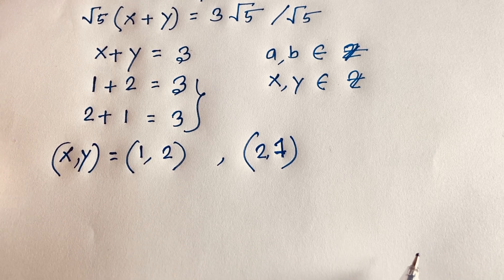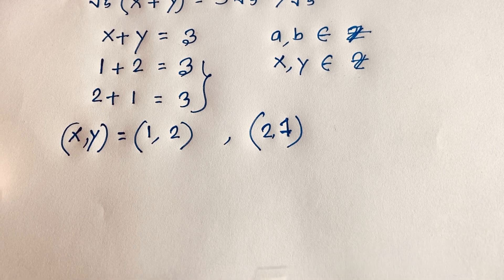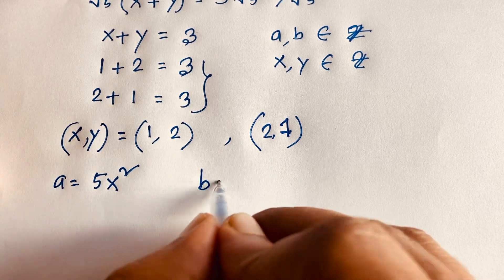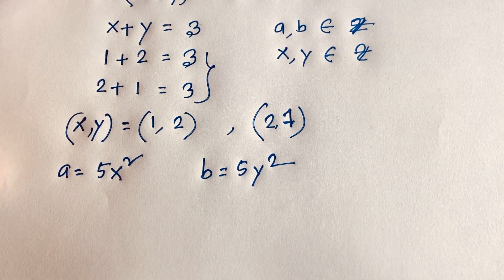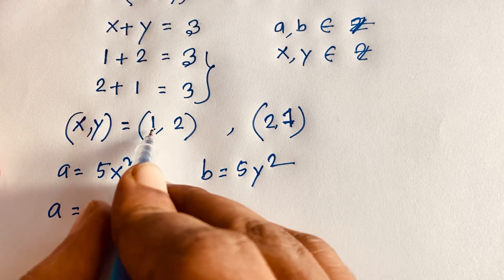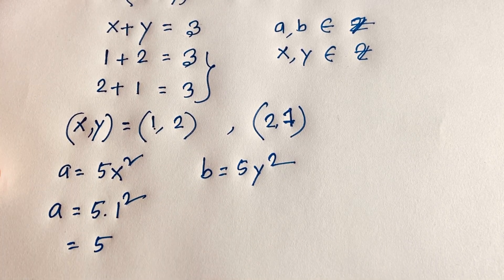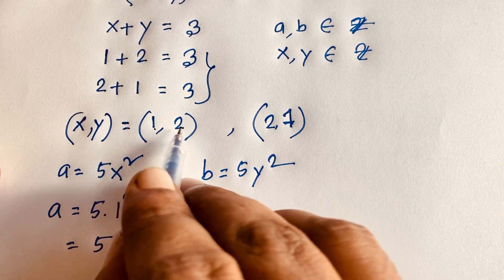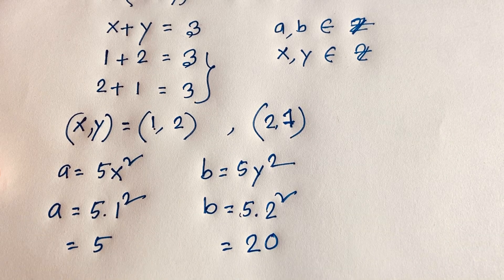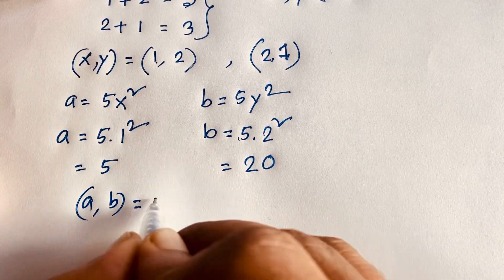Recalling that A equals 5x² and B equals 5y²: in Case 1, when x equals 1, A equals 5 times 1 squared equals 5. When y equals 2, B equals 5 times 2 squared equals 5 times 4 equals 20. So we find A and B equal to 5 and 20.